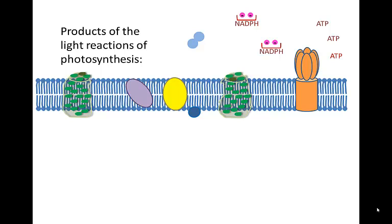Plus, the products of non-cyclic photophosphorylation are ATP and reduced electron carriers, which carry hydrogen atoms that can be used to make sugars. Oxygen gas is also produced as a byproduct.